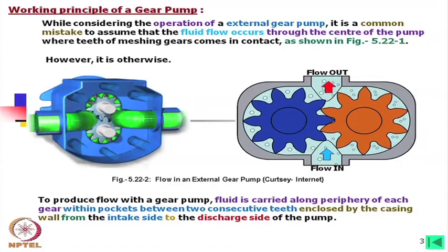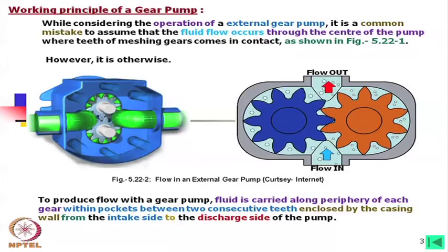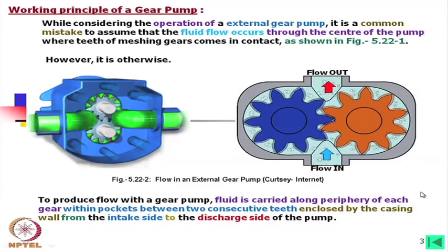However, my earlier statement that there will be high ripple is due to the fact that the compression geometry and volume discharge are such that we have very high peaks in the ripples. For example, within one revolution, if there are 10 teeth, there are 20 chambers. But there will actually be 10 ripples, because two pockets are giving flow together, and you will find the ripple is not the same as in the case of a piston cylinder. We will show that curve later in this lecture.